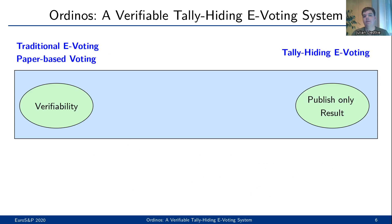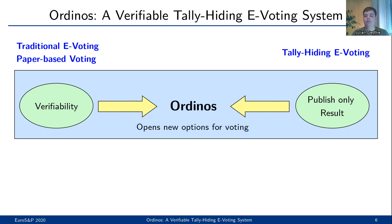On the one hand, we have verifiability. And on the other hand, we have tally-hiding, where we only want to reveal the election result. With Ordinus, we combine both of these properties. Ordinus is the first provable, secure, verifiable and tally-hiding e-voting system. Therefore, Ordinus opens completely new possibilities for votings, because it allows for elections that cannot be done with traditional e-voting schemes or traditional paper-based votings.